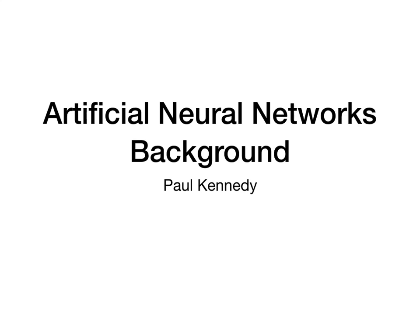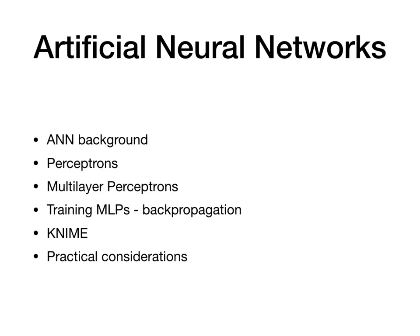Hi everybody, Paul here again. This week we'll be looking at artificial neural networks. This is a really big area but we're just going to have a bit of an overview of it in this section and then we'll be looking at some simple or older approaches later. So this lecture we'll be looking at a background of artificial neural networks. We'll be later talking about perceptrons, which is a really simple early method for neural networks. We'll show how this was transformed into something called multilayer perceptrons, which are essentially what the main approaches are now based on. We'll look at how we train multilayer perceptrons using a famous algorithm called backpropagation. Then we'll look at how to use KNIME to train some neural networks and lastly some practical considerations on using neural networks.